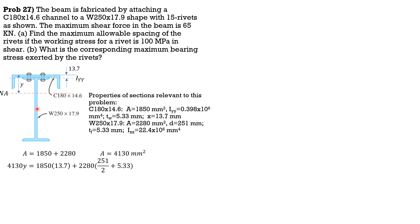The centroid of the wide flange is located at depth 251, so from the centroid to the top of the wide flange it's 251/2, and we add the thickness of the web of the channel, 5.33 mm — that gives the distance of the centroid of the wide flange to the topmost level. Solving, y = 78.36 mm.